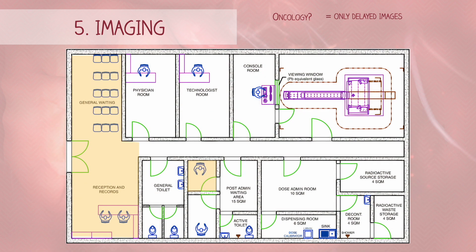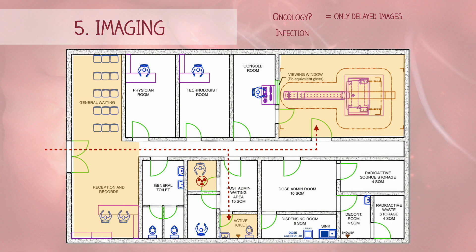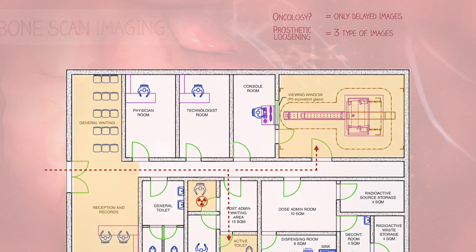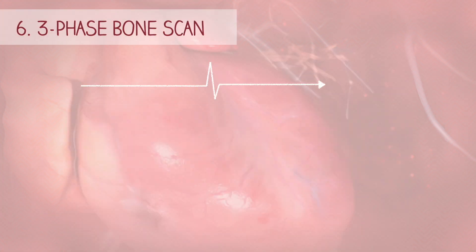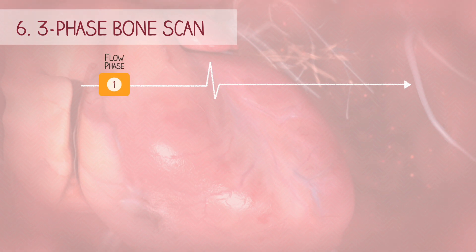Before the patient is scanned, ask them to urinate to help eliminate any tracer not absorbed by bone cells. If doctors suspect an infection, stress fracture, or loss of prosthesis, images will be taken at three different time points after injection. This process is called a three-phase bone scan. As the name suggests, a three-phase bone scan consists of three phases: a flow phase, a blood pool phase, and a delayed phase.